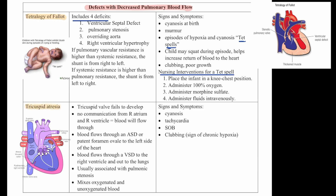Then we have tricuspid atresia. This is when the tricuspid valve fails to develop. There's no communication between the right atrium and right ventricle, so blood flows through an ASD or patent foramen ovale to the left side of the heart. Blood flows through a VSD to the right ventricle and out to the lungs, usually associated with pulmonic stenosis, mixing oxygenated and unoxygenated blood. Signs and symptoms are cyanosis, tachycardia, shortness of breath, and clubbing.